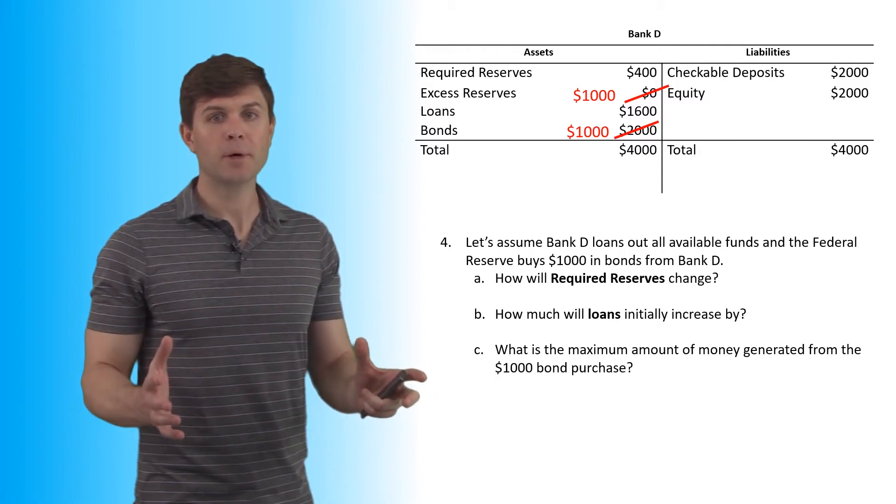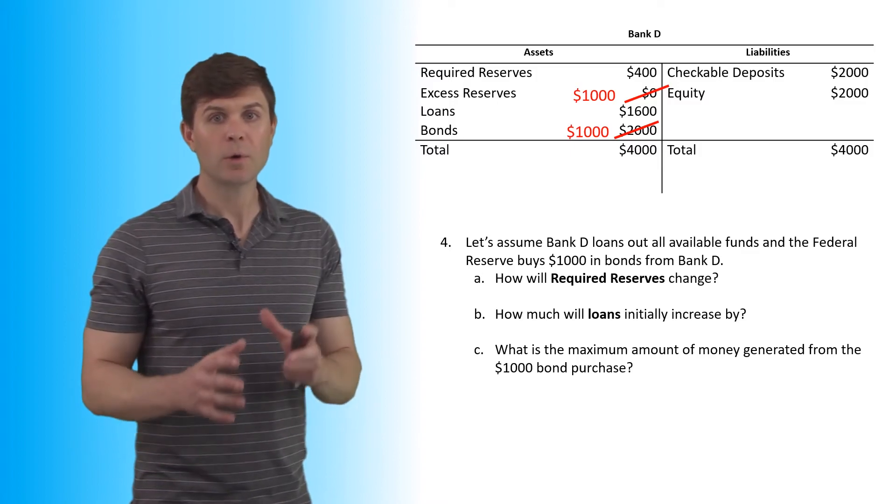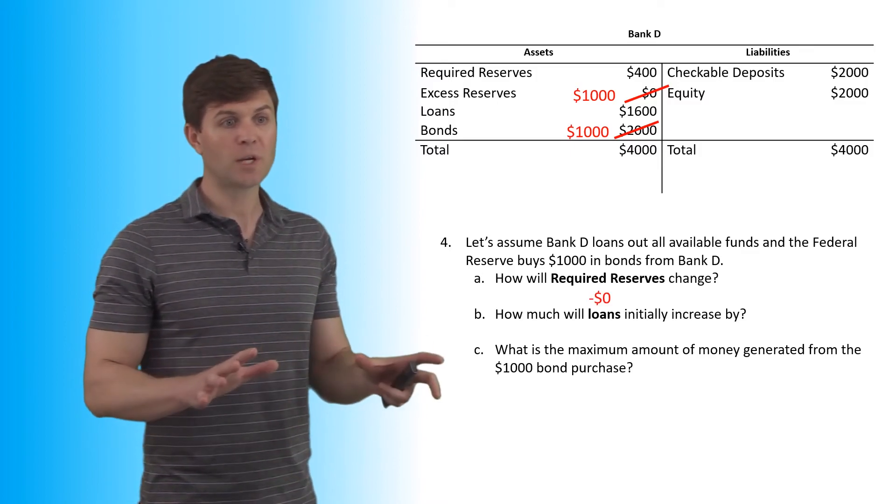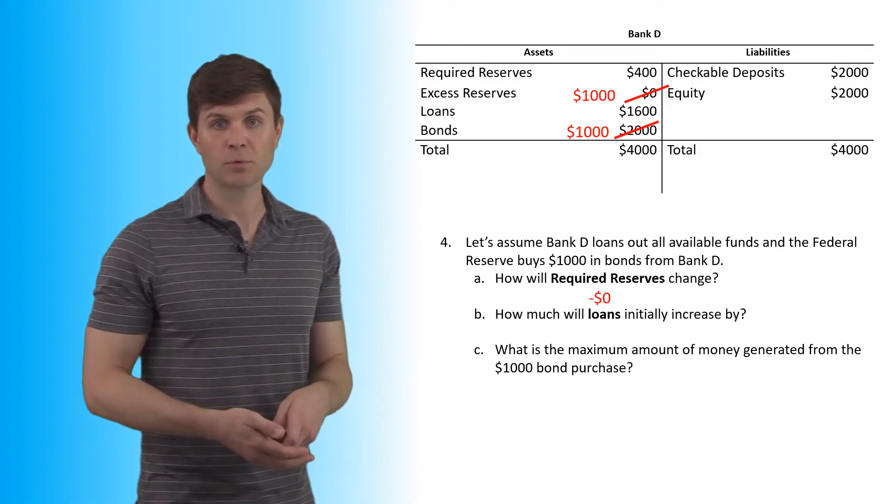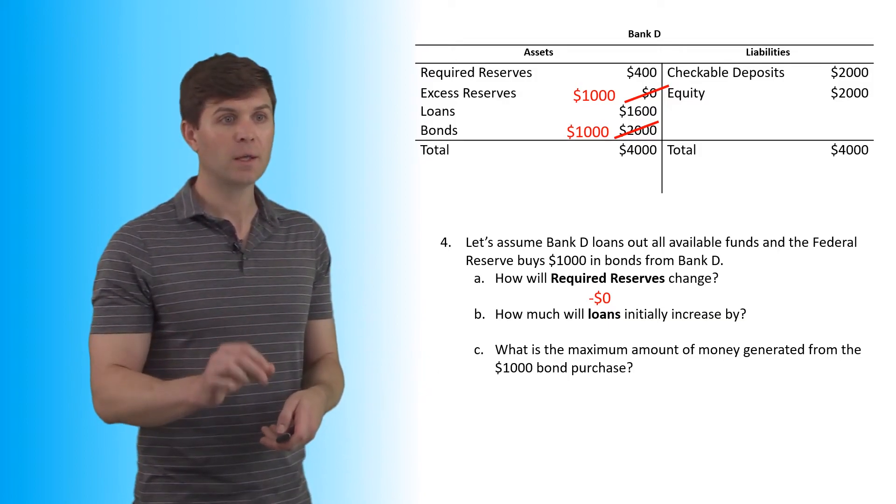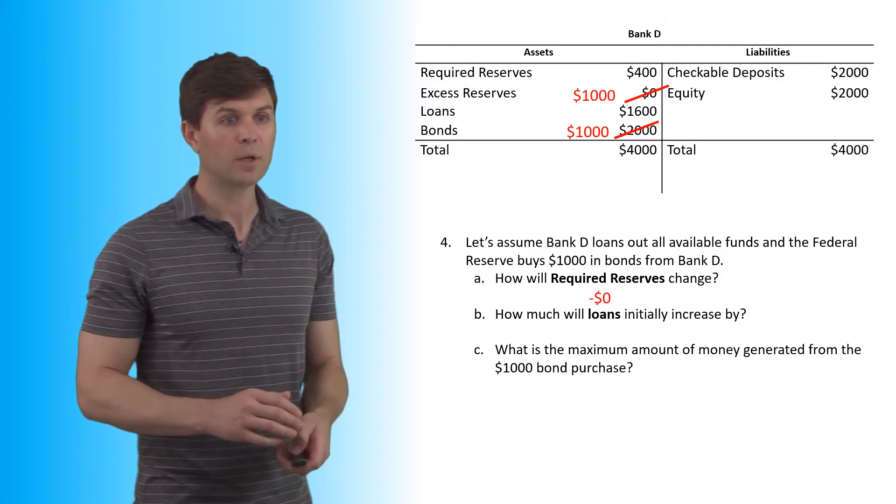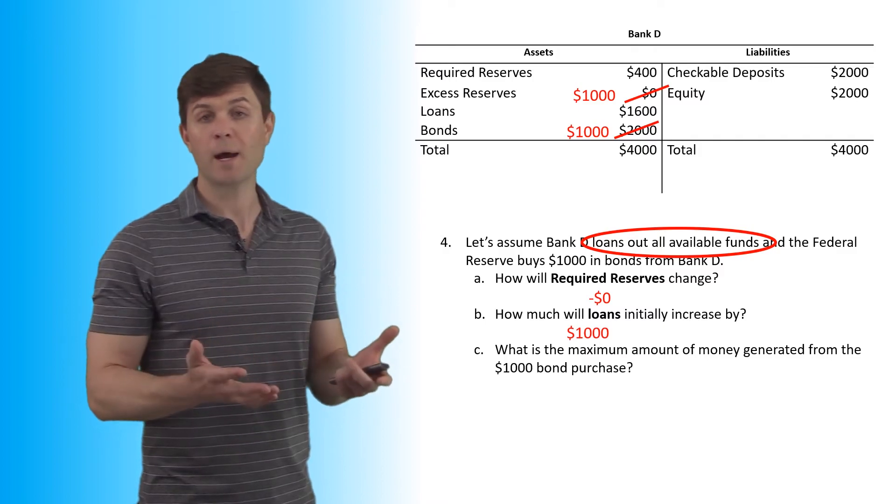So how will required reserves change? Nobody deposited any money. Nobody took any deposits out. If demand deposits don't change, neither do required reserves. So required reserves change by zero. How much will loans initially increase by now? Key word there is initially. We have $1,000 in excess reserves. This bank loans out all excess reserves. So it's going to increase by $1,000.